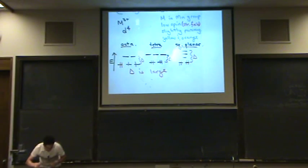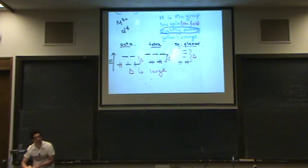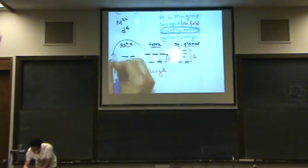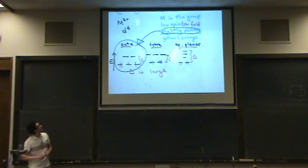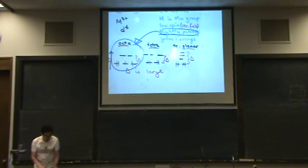Because I know that this is slightly paramagnetic, the only possibility is the one that's paramagnetic, which is the one on the left. That's the only possibility that can be slightly paramagnetic. The other two are diamagnetic. So it can't be that.